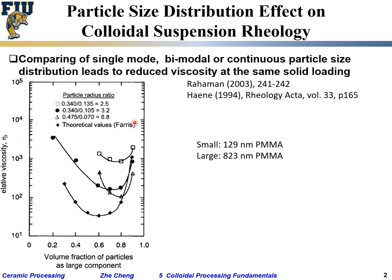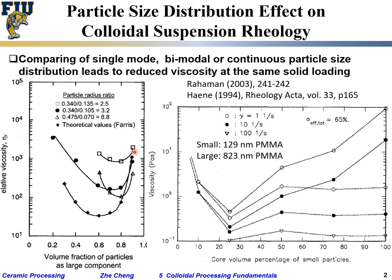The essence here is that you have one more knob to turn. By changing from single-modal to bimodal or continuous particle size distribution, that is another factor that will change the flow behavior. It is not too difficult to do experiments to observe this effect.